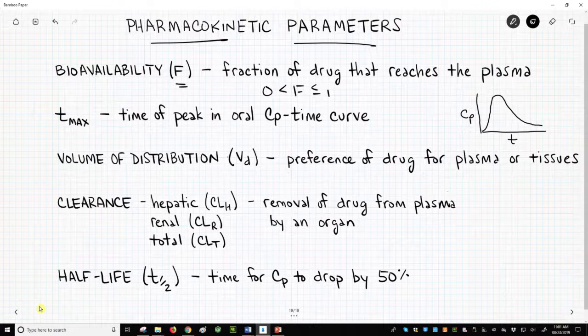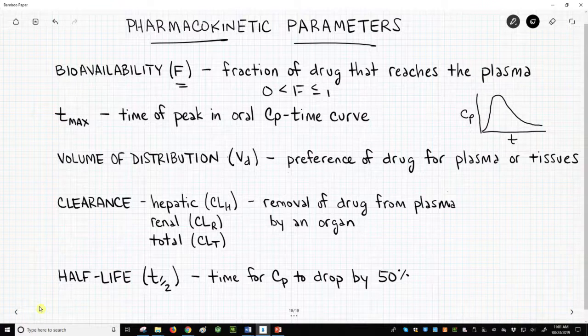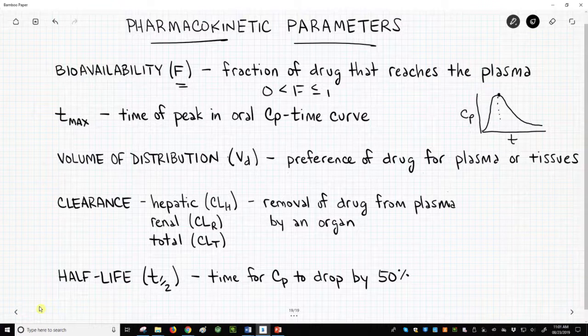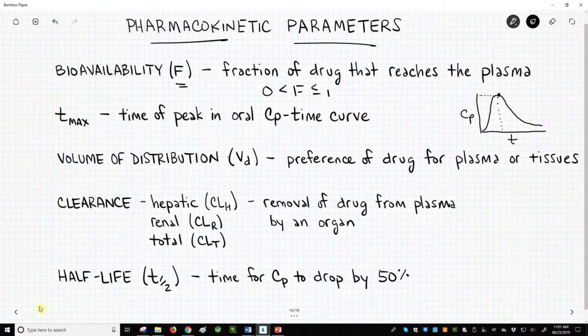Tmax is the time required for the oral CP time curve to reach its peak. Tmax can be read directly off a CP time curve for an oral drug. Over on the right of the screen, look at the time at which the highest CP value is reached. Tmax is mostly affected by absorption.